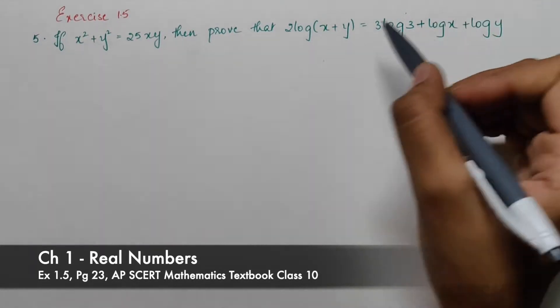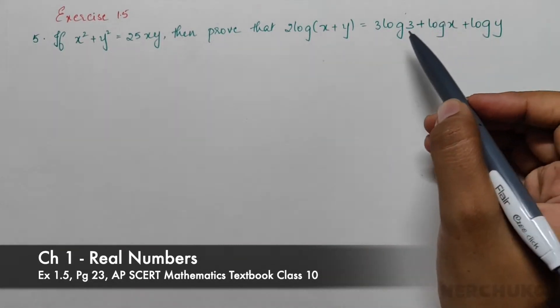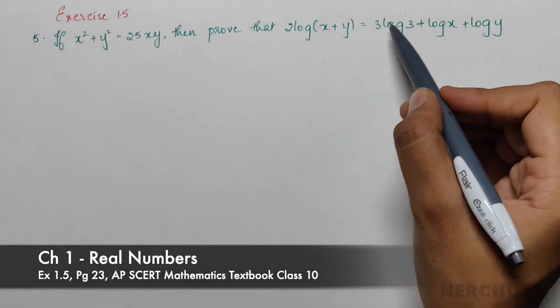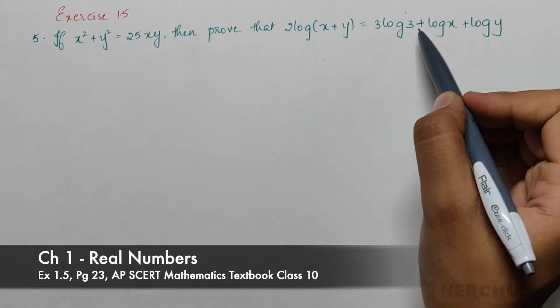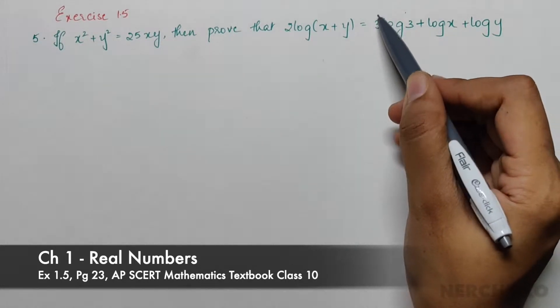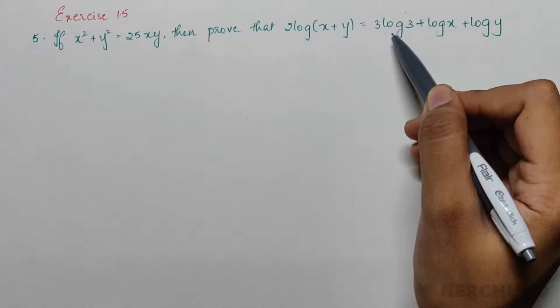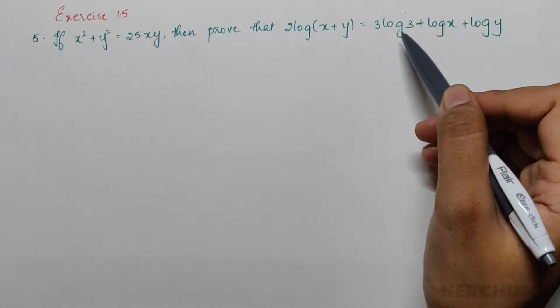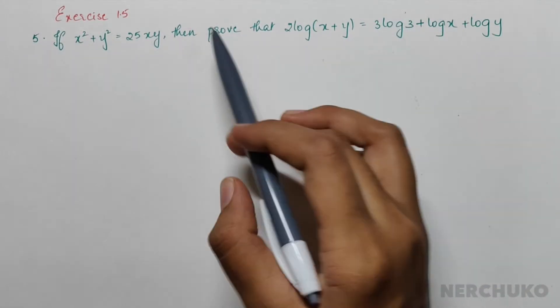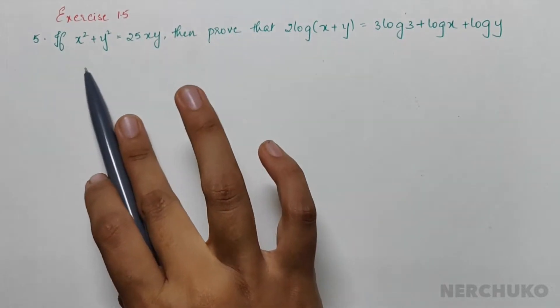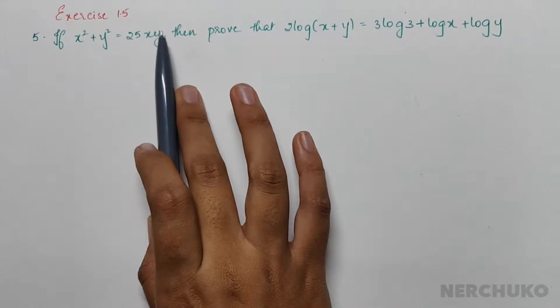If you observe this equation, in the final equation we should have 3log3 on the right-hand side. If I take this as a power, I would have log(3³), which is log27. So we have to solve this equation in such a way that we end up with one of the numbers as 27.